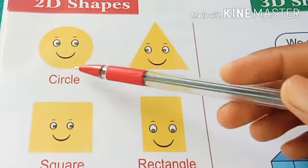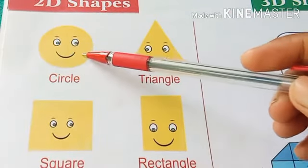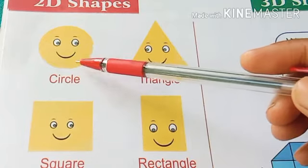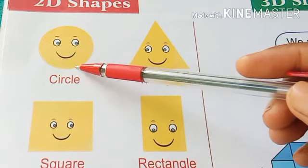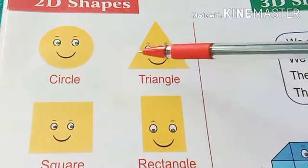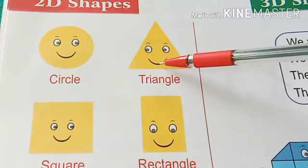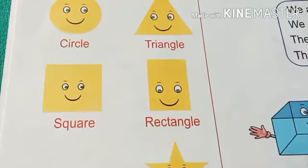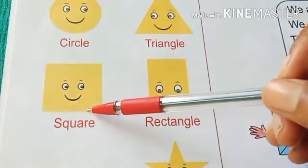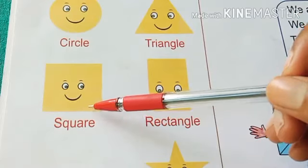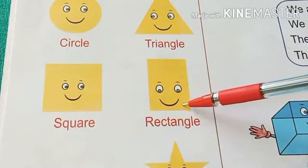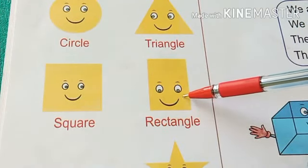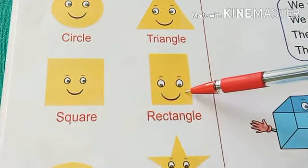This is a circle — circle means gula. And this is a triangle — triangle means tibhuj. This is a square — square means varg. This is a rectangle — rectangle means aayat.